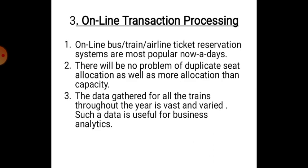Third, online transaction processing: online bus, train, or airline ticket reservation systems are most popular nowadays. There will be no problem of duplicate seat allocation or over-allocation beyond capacity if you apply IT to online transaction processing — these are the key benefits.